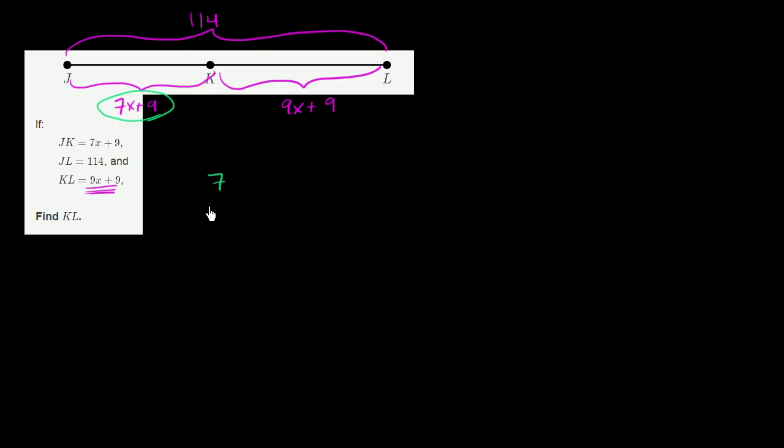We could write that JK, so the length of segment JK plus the length of segment KL, is going to be equal to 114. And we know that the length of segment JK is 7x plus 9. We know that the length of segment KL is 9x plus 9. So plus 9x plus 9. And this is going to be equal to 114.